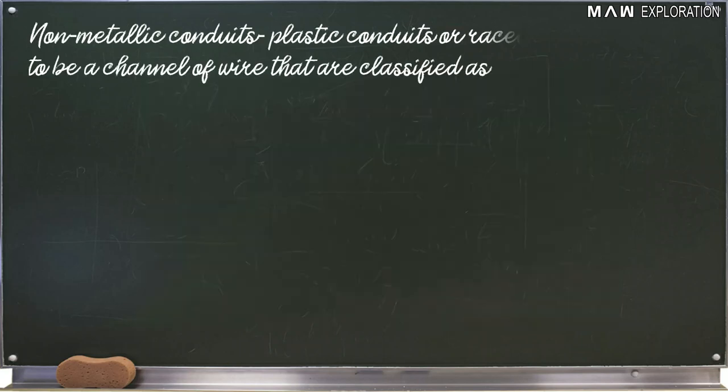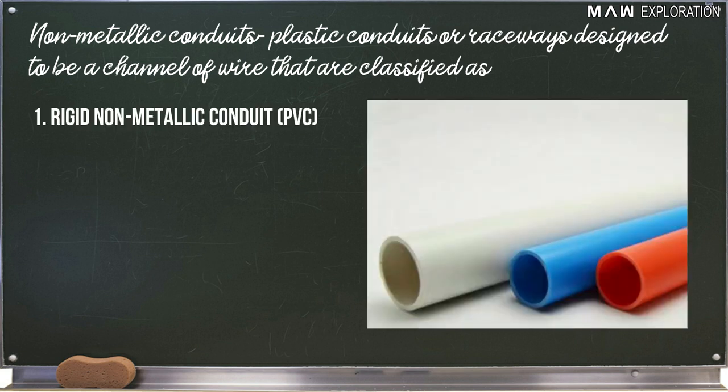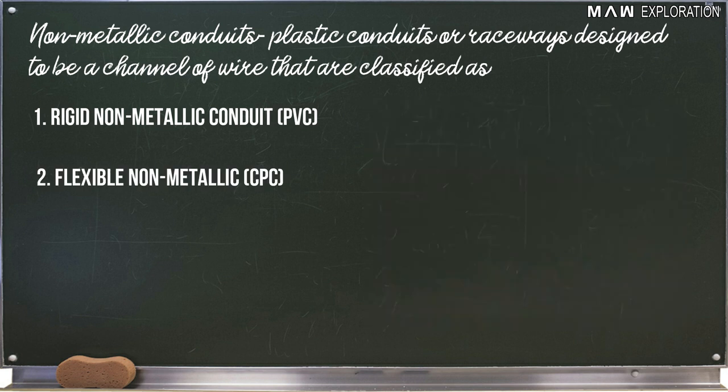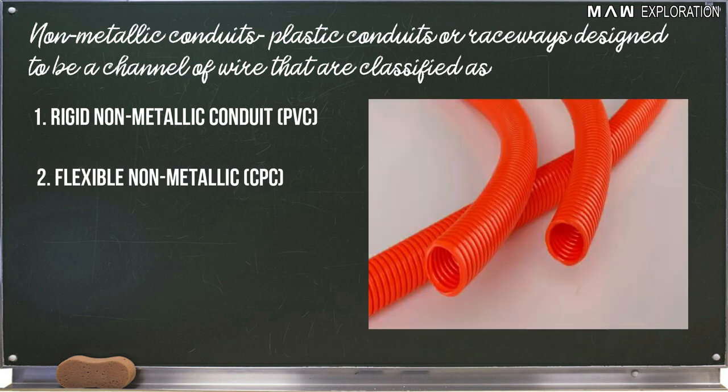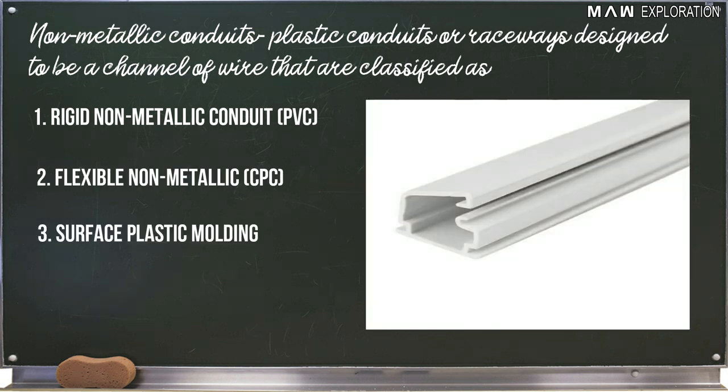Number 11, non-metallic conduits. These are plastic conduits or raceways designed to be a channel of wire that are classified as rigid non-metallic conduit or the PVC, the flexible non-metallic or CPC, and the surface plastic molding.